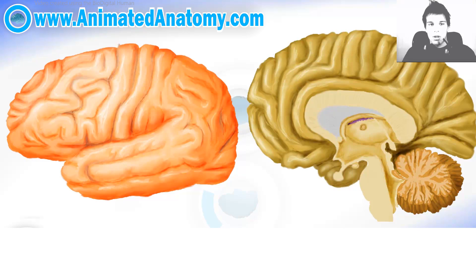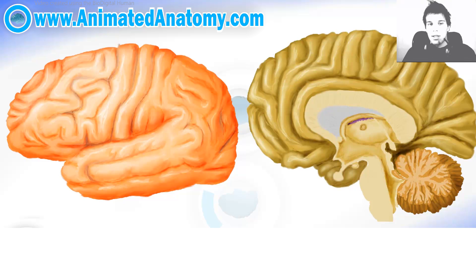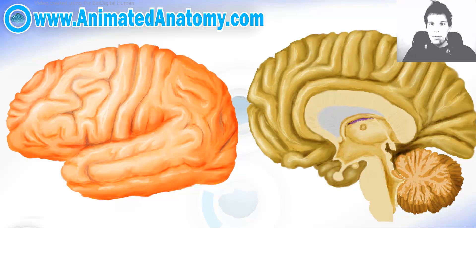In this lesson, I will talk about the areas of the cortex. Of course, there are 52 areas according to Brodmann's map of the brain cortex. However, we will just go through some areas of the brain that have great functional significance and we will not discuss all 52 areas of Brodmann's map of the cortex.